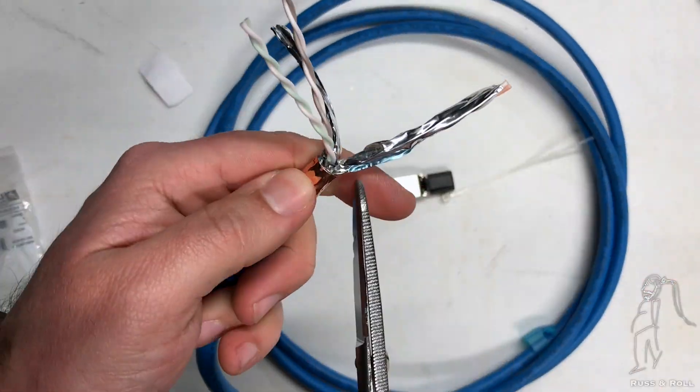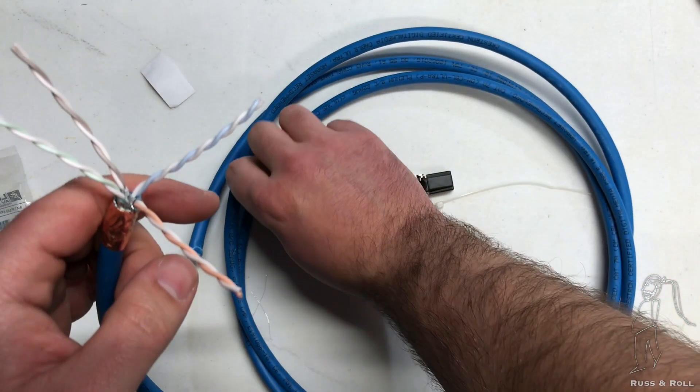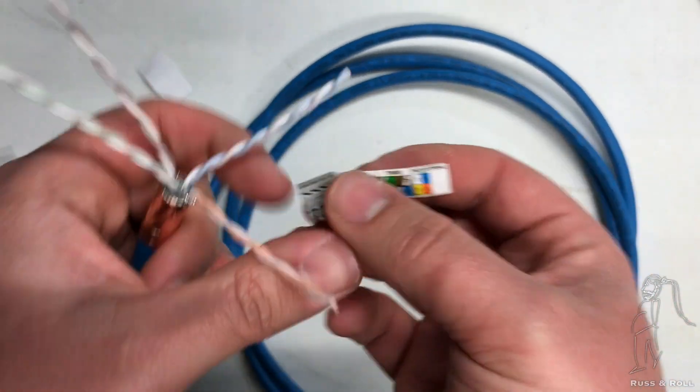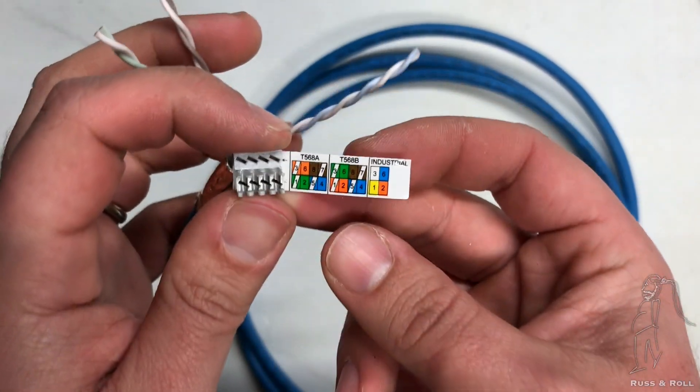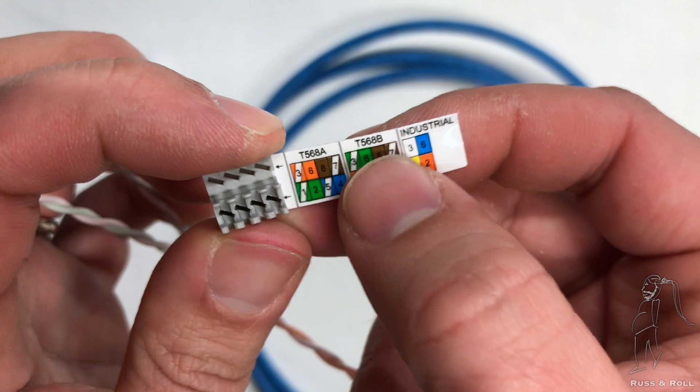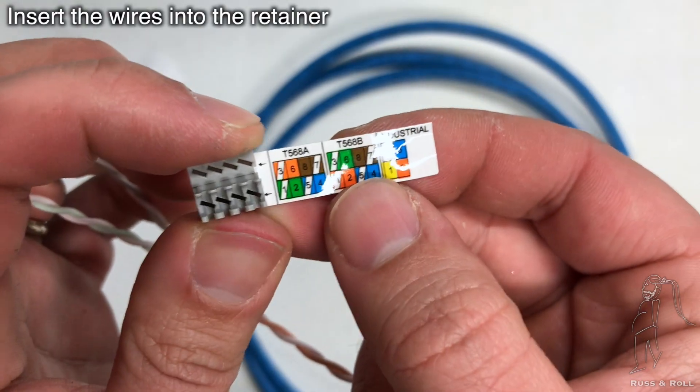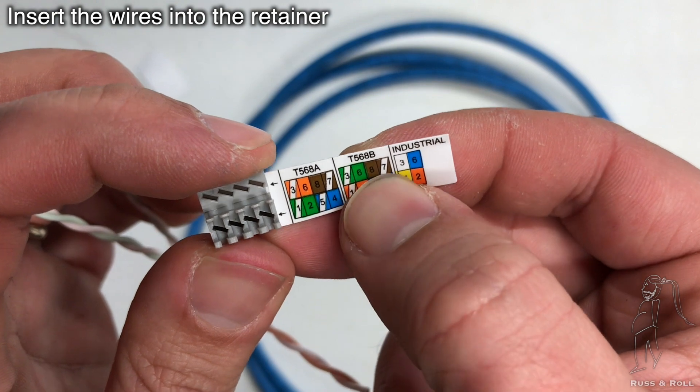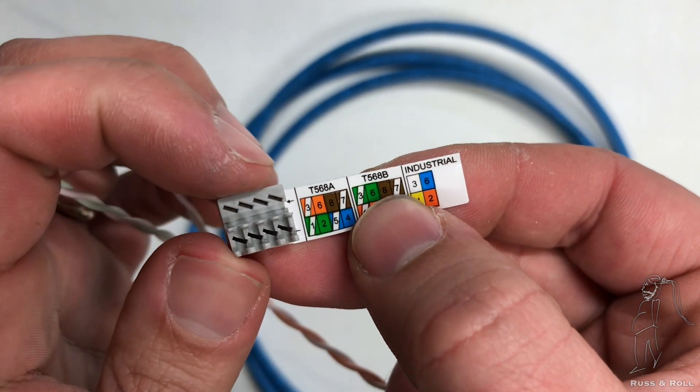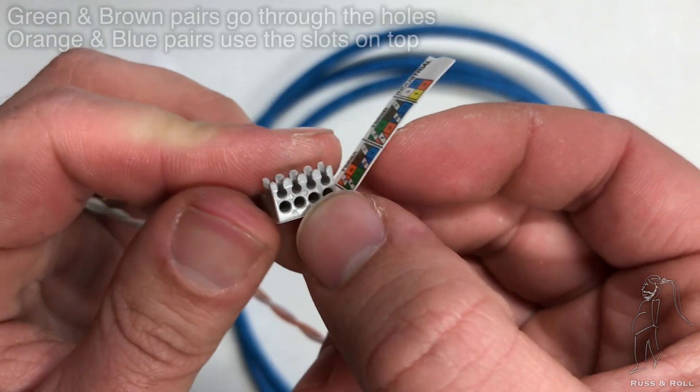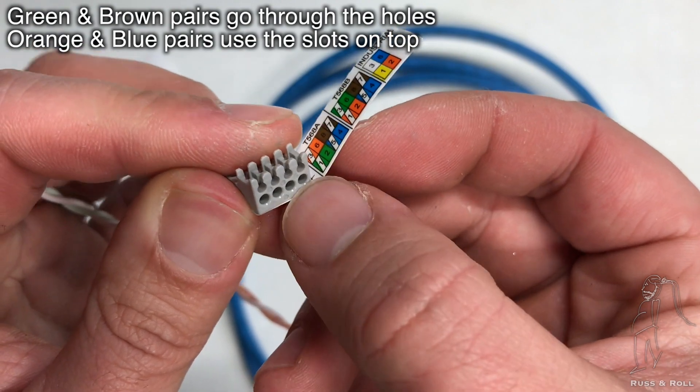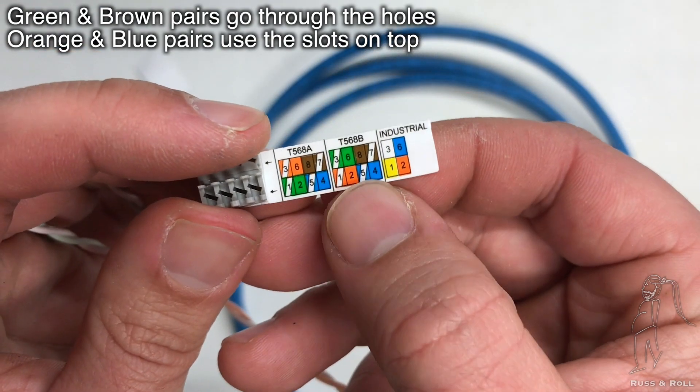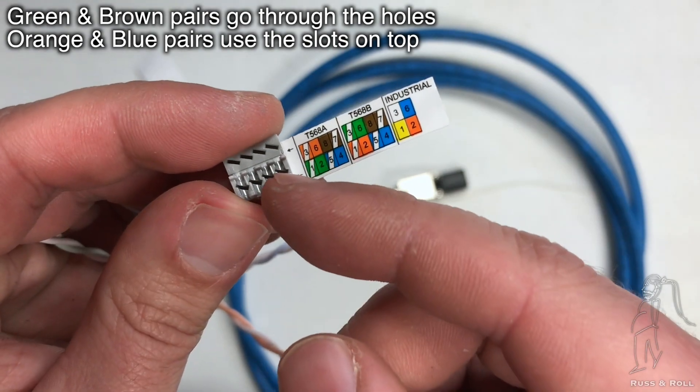Now you're going to repeat this process for the rest of the pairs. Be careful not to nick the insulation on these wires. It's really kind of soft and fragile. Once you've got the foil stripped off, it is time to install the wires into the retainer using the T568B color code. So we're going to start with the green and the browns. Those guys are going to go through these holes, which are the full holes in the retainer. They're on the bottom. The orange and blue are going to go through the top slots.